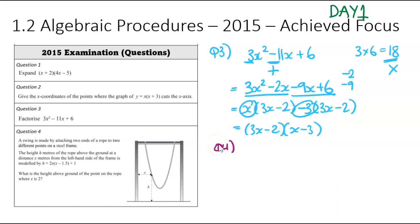To question number 4. A swing is made by attaching the two ends of a rope on different points of a steel frame. That's what we've got up here, the rope attached to the frame. The height h meters of the rope above the ground at a distance of x meters from the left hand side of the frame is modeled by this here. So what that's trying to say is this parabola and this origin, we've got the equation that represents that. What is the height above the ground of the point where x equals 2? So we are curious about what's going to happen to the height when x equals 2. This here is a substitution question.